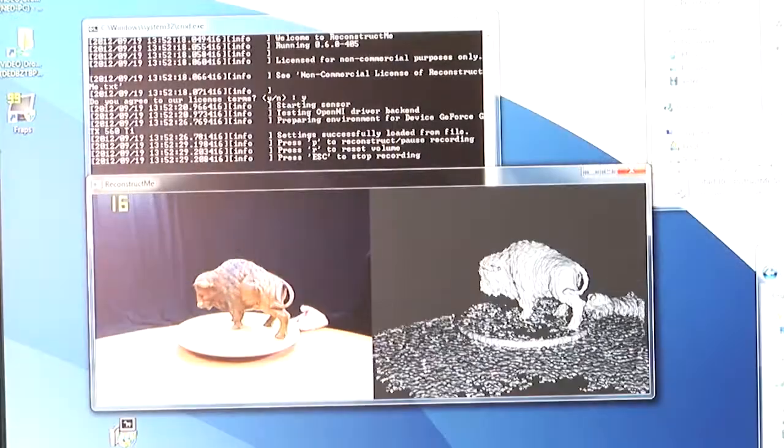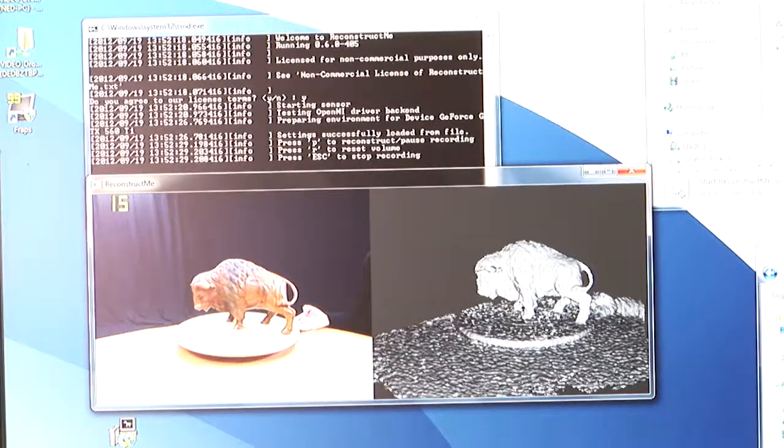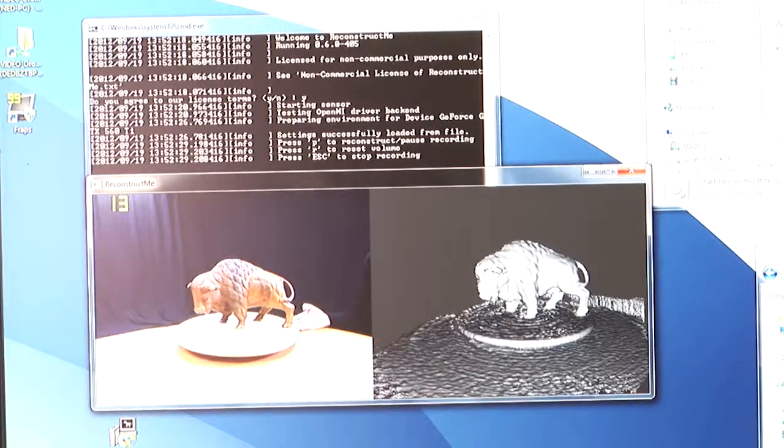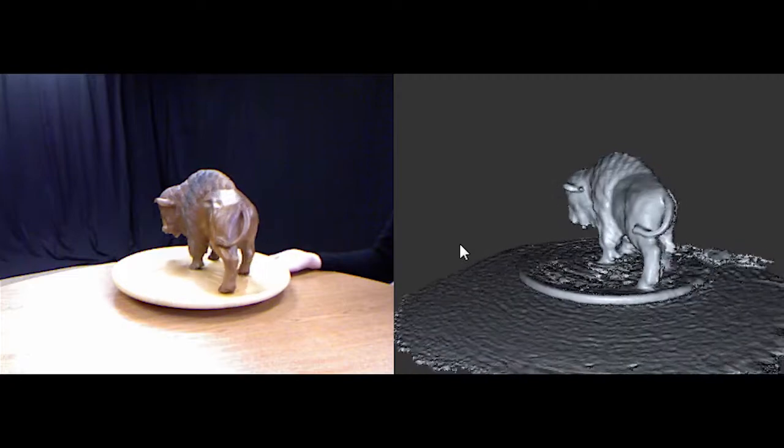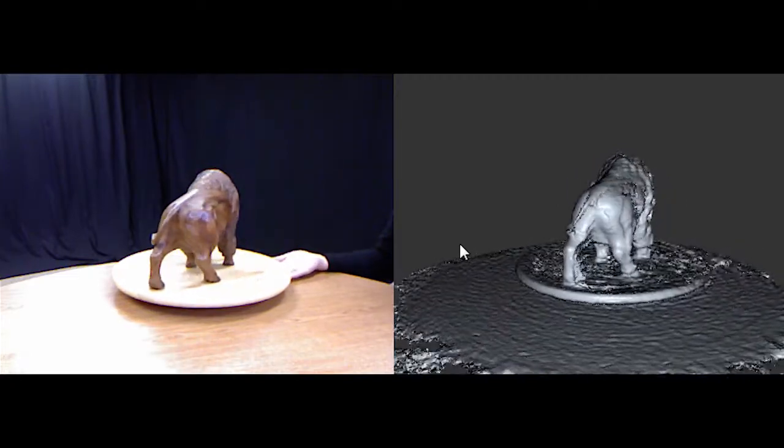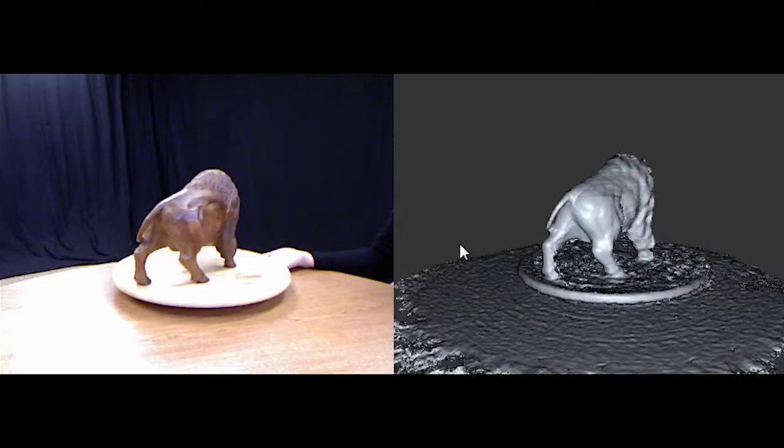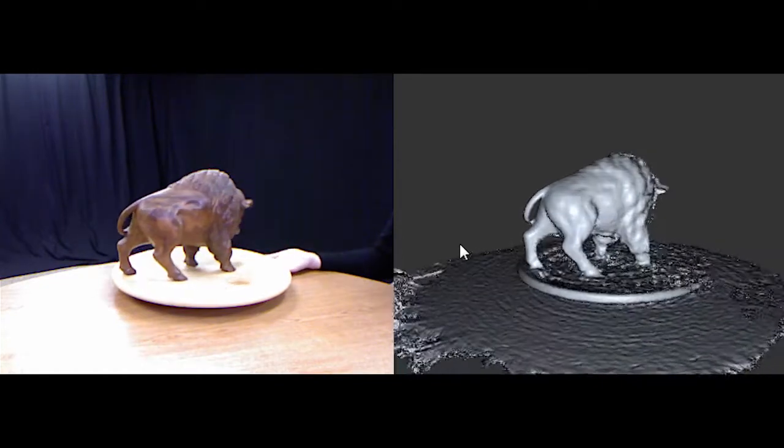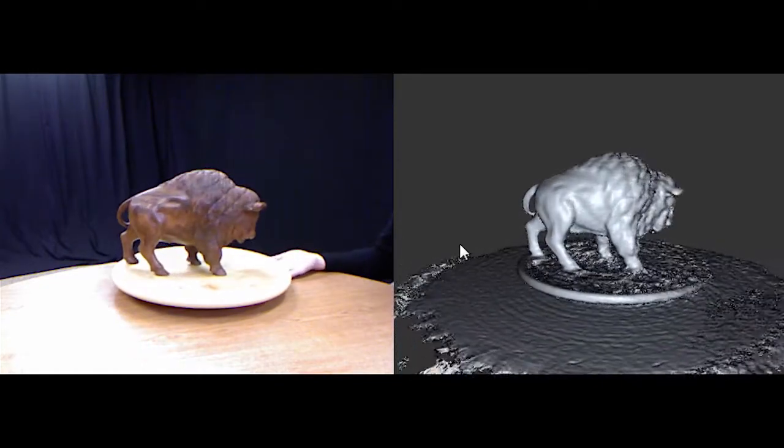What you are seeing here is the 3D scanning process on Reconstruct.me. The left screen represents the live video view of the scanned model, and on the right side you see a 3D model being captured. We capture this footage with fraps.